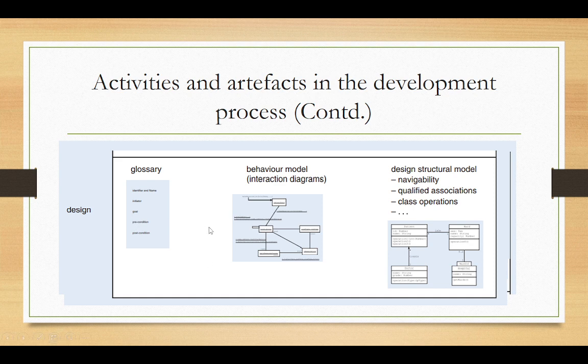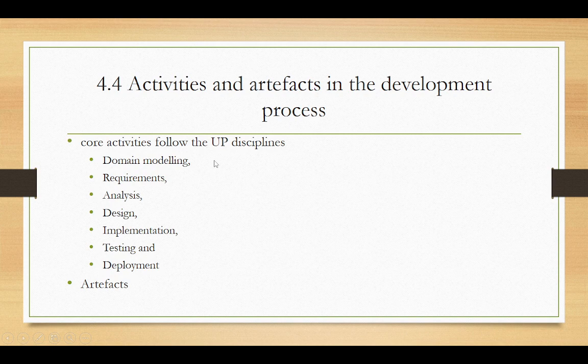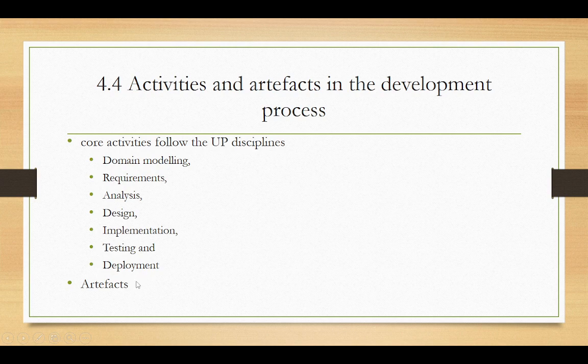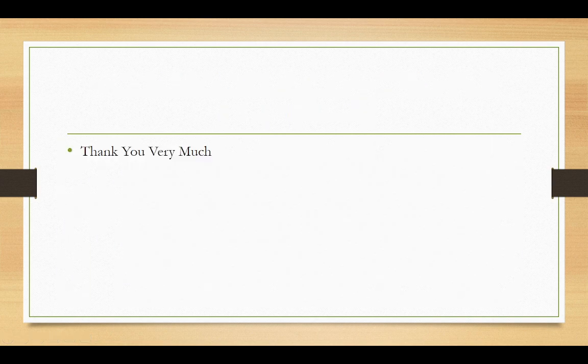Then deployment, the last activity of the software development that is following the Unified Process discipline. Many significant computer systems will consist of a variety of software components located on a number of machines communicating via a variety of hardware and software mechanisms. Our deployment model records how various components are to be mapped onto different machines and how they will communicate. It will be represented using a deployment diagram and the model is called deployment model. So this is all. Thank you very much.